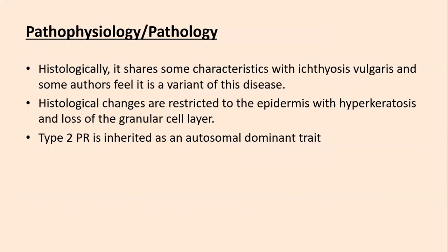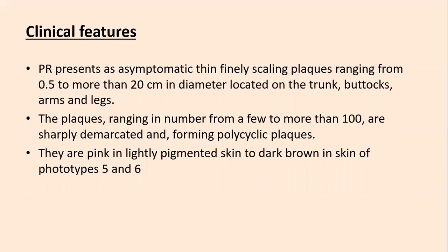Histologically, pityriasis rotunda shares characteristics with ichthyosis vulgaris — some authors feel it is a variant. Histological changes are restricted to the epidermis with hyperkeratosis and loss of the granular layer. Type 2 PR is inherited as an autosomal dominant trait. Clinical features: pityriasis rotunda presents as asymptomatic, finely scaling plaques ranging from 0.5 to 20 cm in diameter, located on trunk, buttocks, arms, and legs. The plaques range in number from a few to more than 100 and are sharply demarcated, forming polycyclic rings. They are pink and slightly pigmented in lighter skin, and dark brown in skin phototypes 5 and 6.